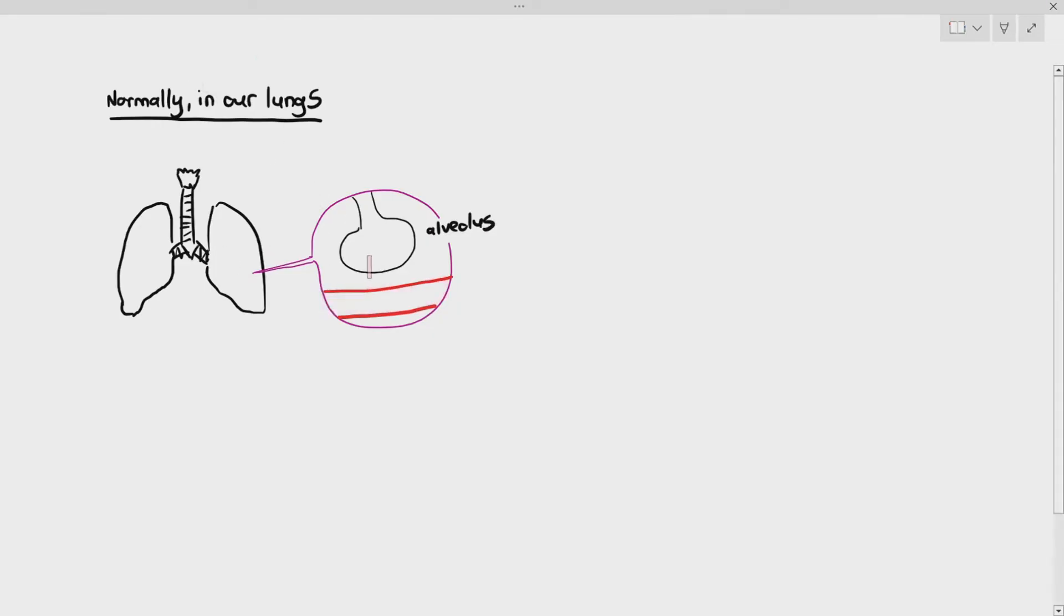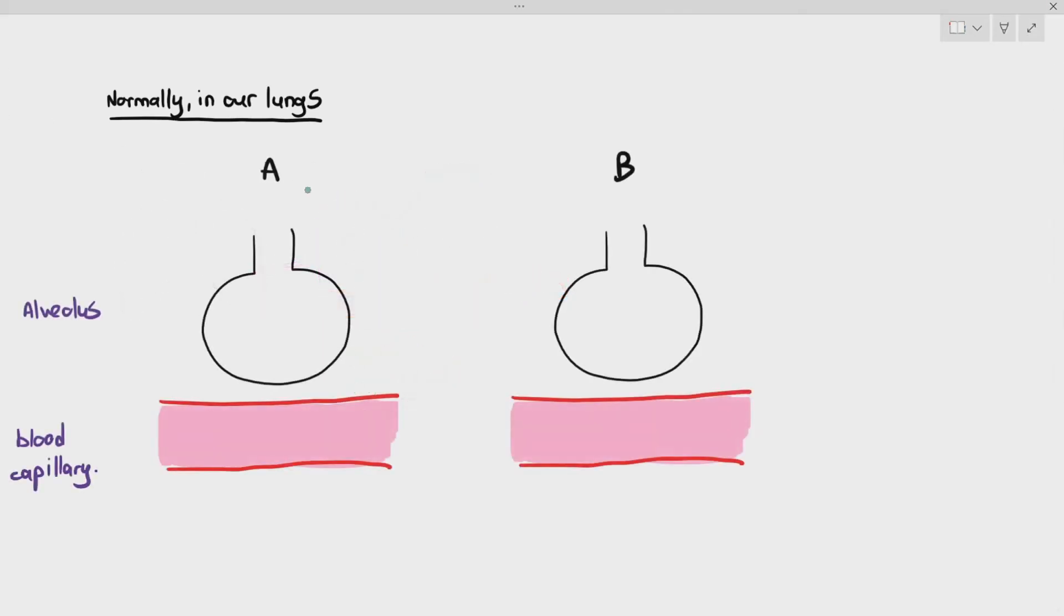And the function of the alveoli in our lungs is to allow gas exchange. For example, when there is oxygen in the alveoli, what needs to happen normally is, it needs to diffuse into the blood, as I've represented over here. As you can see, in situation A here, there is a higher concentration of oxygen in the alveolus, compared to the capillary, and diffusion will happen.